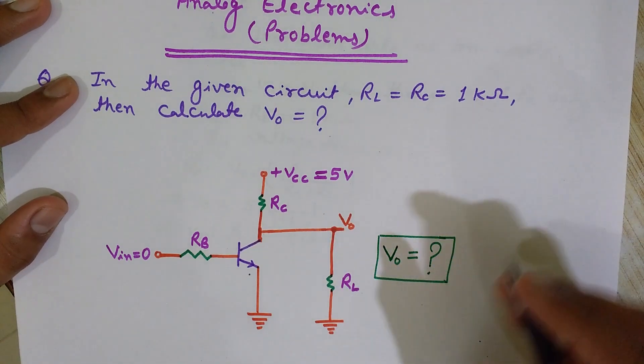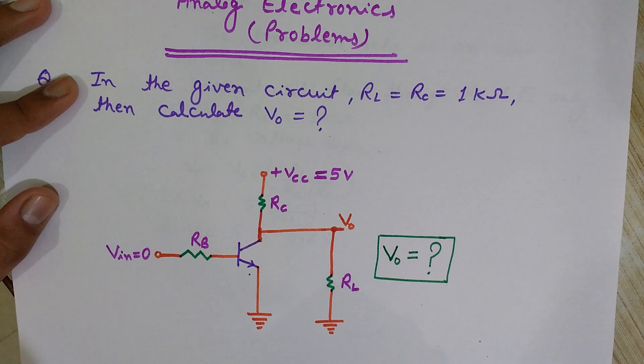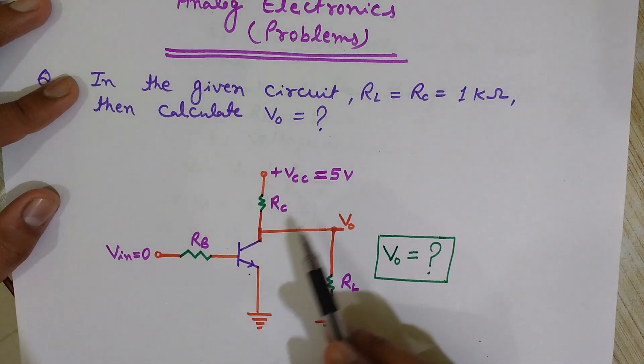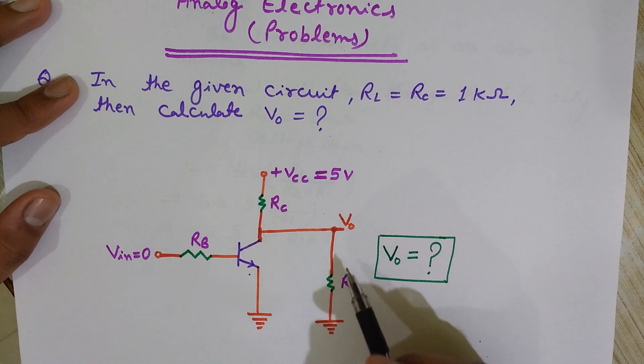We can also use the voltage division rule. You should know the rule, actually, where you cannot easily find by observation you can use voltage division rule. According to voltage division rule, what we do is V0 will be VCC, 5 volt, multiplied by RL divided by RC plus RL.